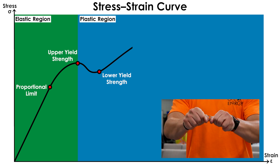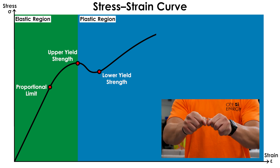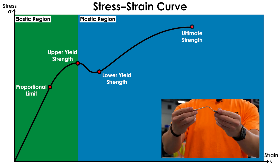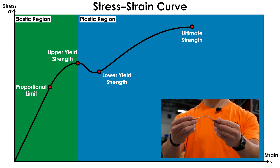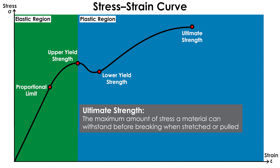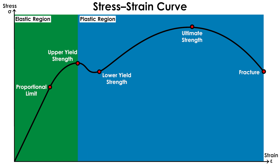Any bending or deformation that happens after the yield strength is reached becomes permanent and cannot return to its original shape once the force is removed. As the metal continues to deform, it will eventually reach a point called the ultimate strength. This is the maximum force the material can handle. Beyond this point, the material starts to weaken until it reaches the end of the line and eventually breaks. At the end of the line is the failure point. This is the point where the metal will break, shear, bend, snap, crack, or pop.